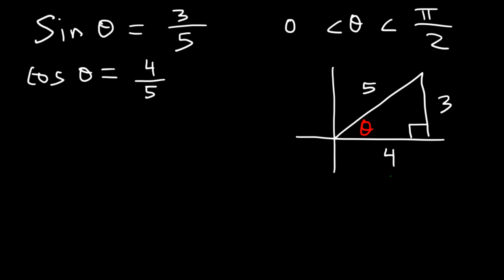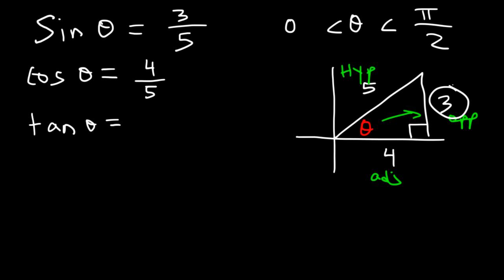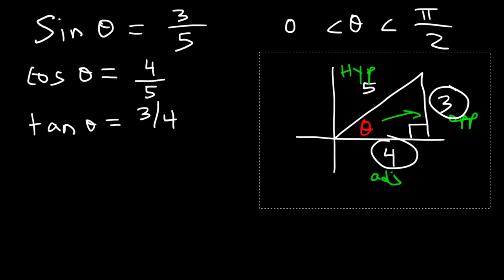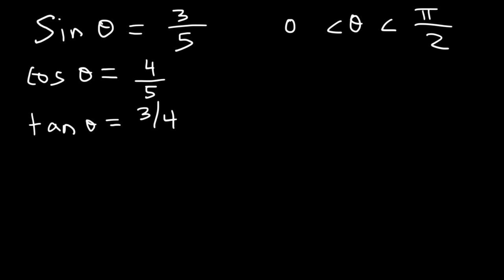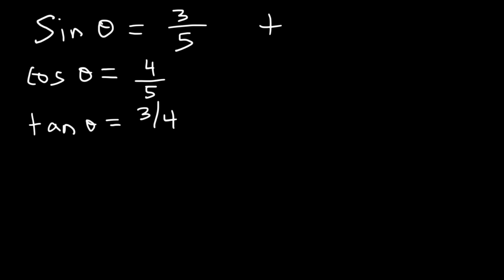So recall that 4 is adjacent to θ, 3 is opposite to θ, and 5 is the hypotenuse — the longest side of the triangle. Now we need to find tangent θ. Tan θ equals the opposite side divided by the adjacent side, so that is 3 divided by 4. Now that we have sine, cosine, and tangent, we can solve everything.